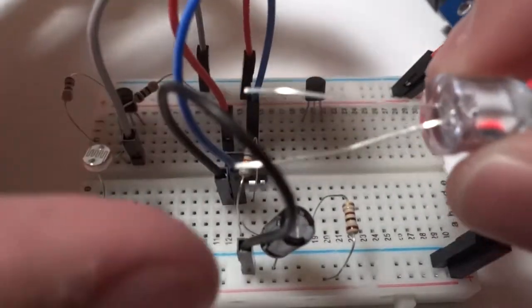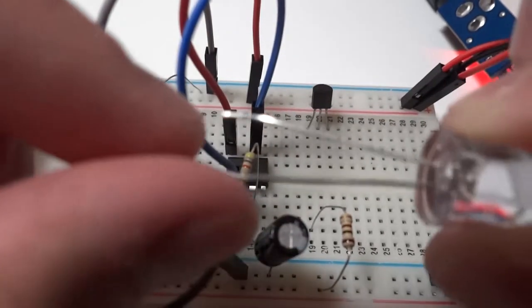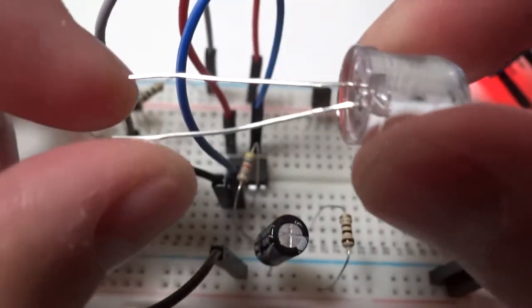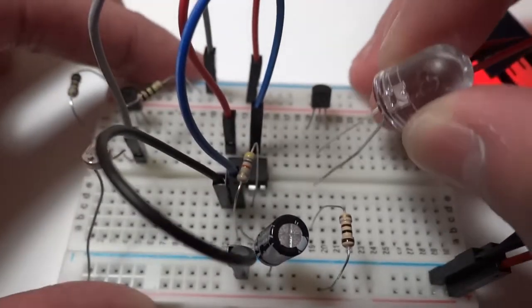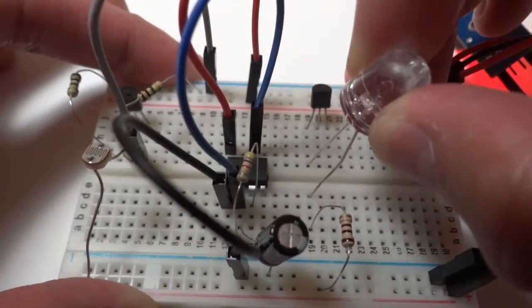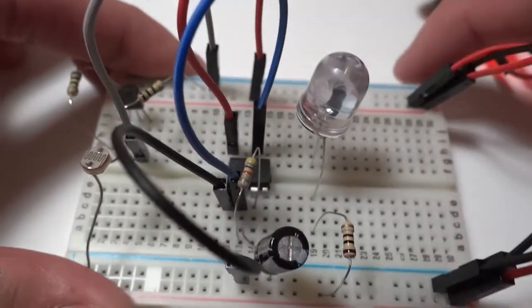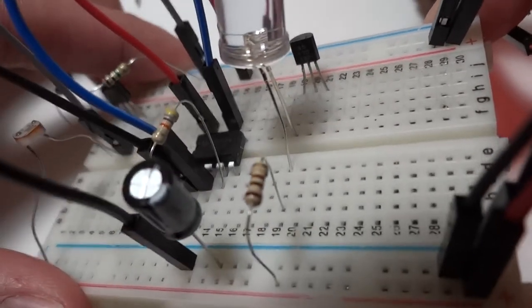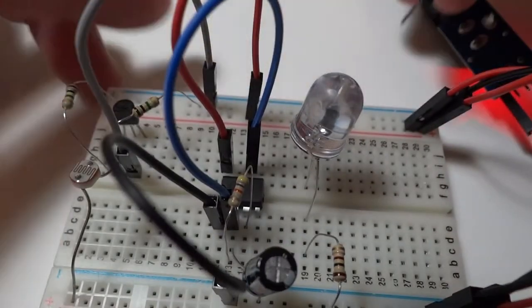Next, connect the positive side of the LED to the resistor and the negative side to the drain of the transistor. Like the capacitor, the longer side is the positive. Then we connect the source to ground.